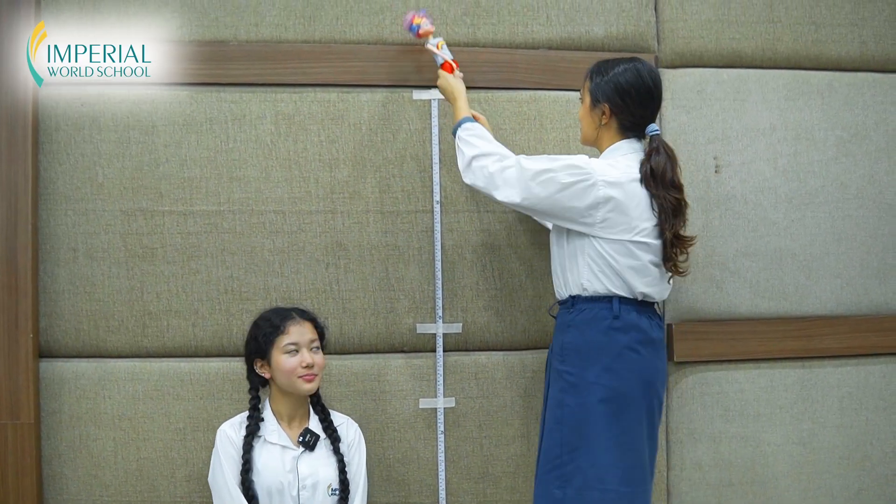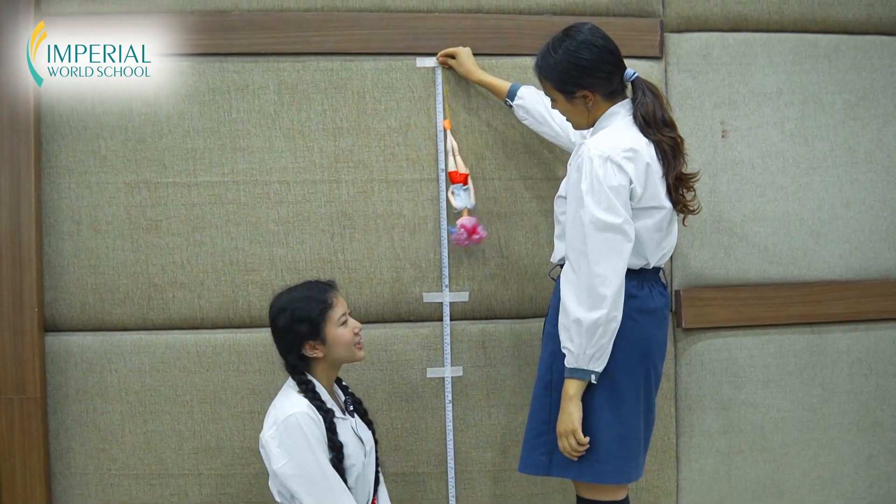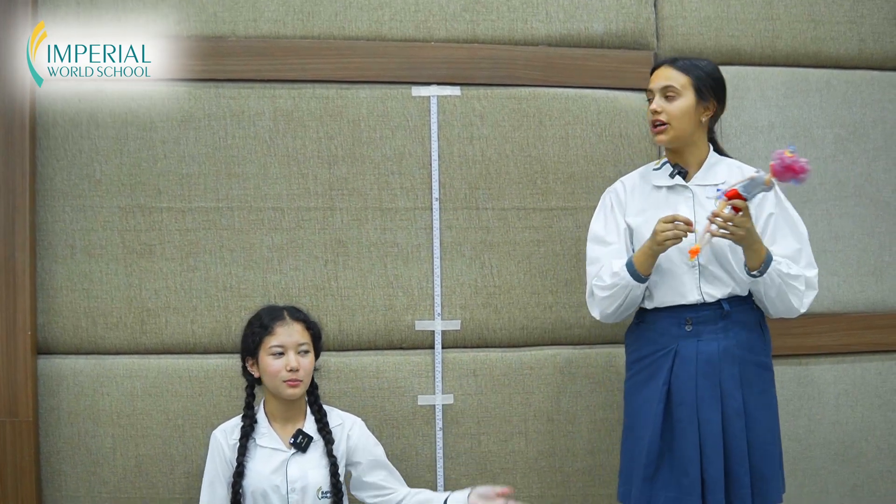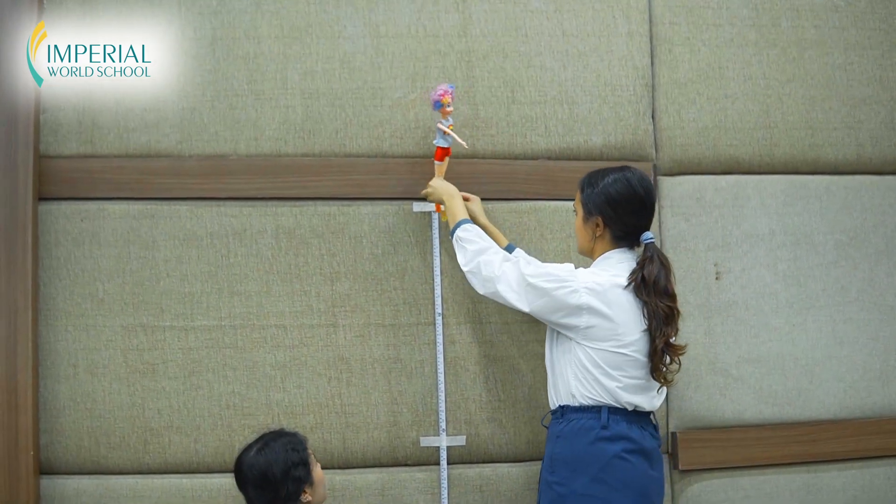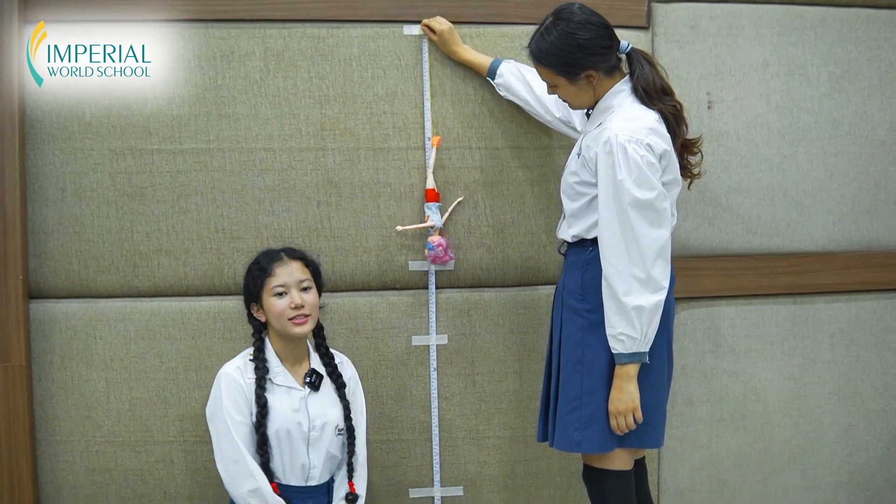Now we have added two more rubber bands. So the drop is 62 centimeters. So now we have six rubber bands. Here we go again. So our total drop is 73 centimeters.